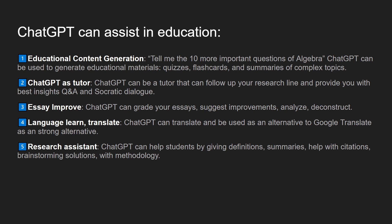ChatGPT can help you grade your essay, suggest improvements, and analyze and deconstruct language. It can also help you translate, serving as a strong alternative to Google Translate. As a research assistant, ChatGPT can give students definitions, summaries, help with citation, brainstorming solutions, and research methodology.